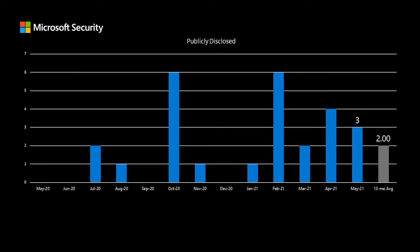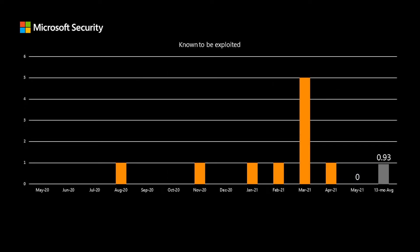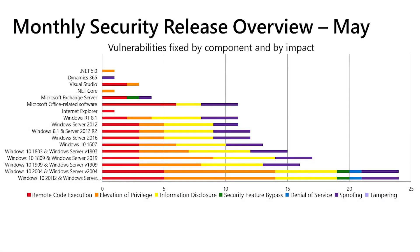When we look at publicly disclosed vulnerabilities, we have 3 this month, which is just above our average of 2. When we look at vulnerabilities known to be exploited at the time of release, this month there are 0, and we're averaging just under 1. So the number of vulnerabilities may be lower than normal, but when we look at the max CVSS score of 9.9 and another 9.8 vulnerability, it becomes apparent that a lower number doesn't necessarily lower the risk — because we have high, high severity vulnerabilities.